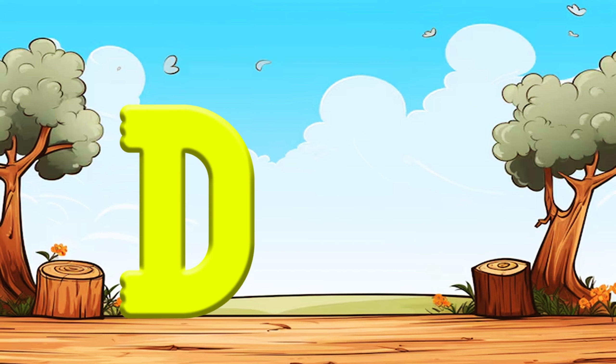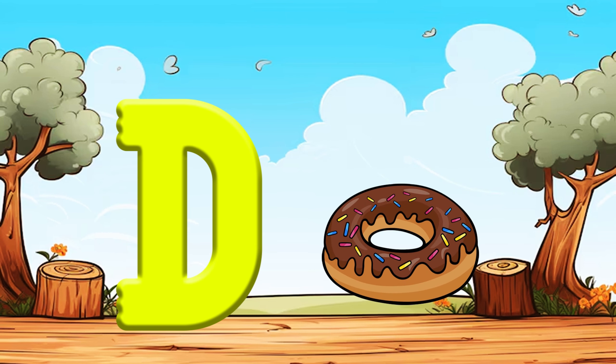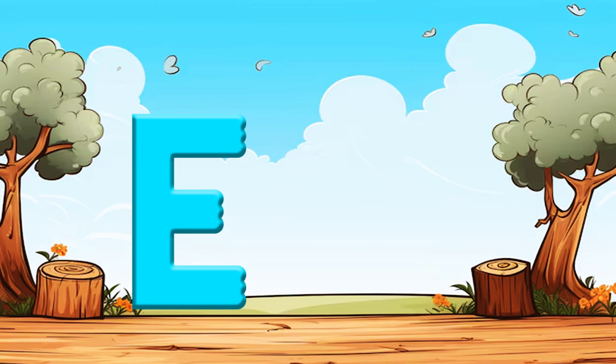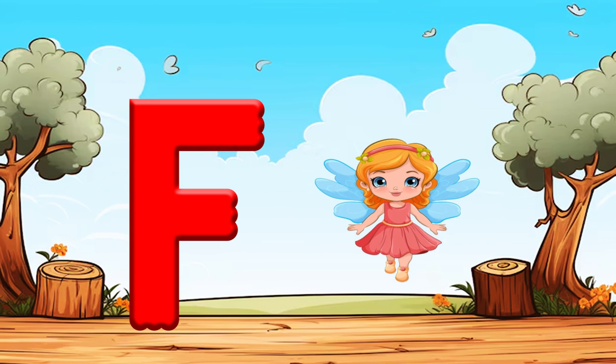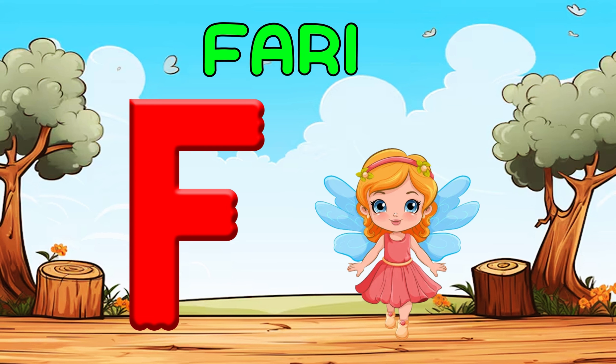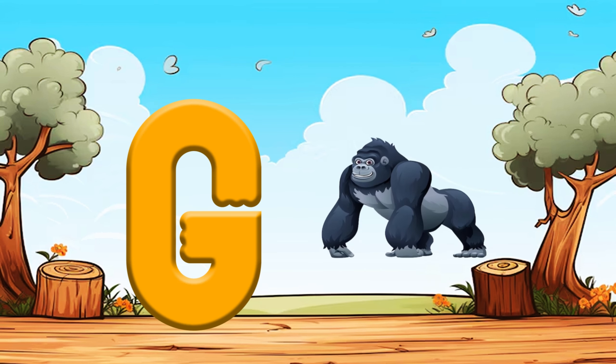D is for Donut, Da, Da, Donut. E is for Elephant, A, A, Elephant. F is for Fairy, Fa, Fa, Fairy.